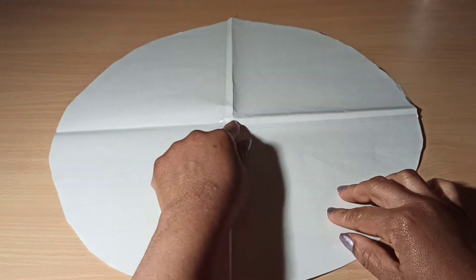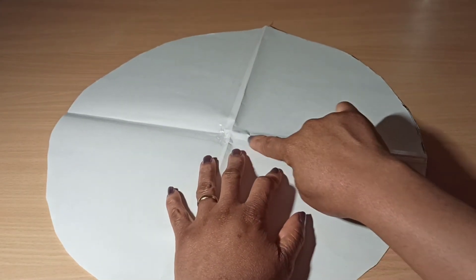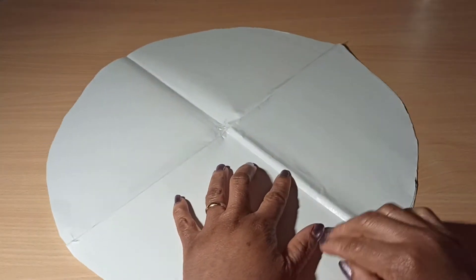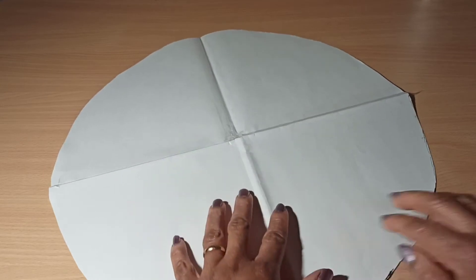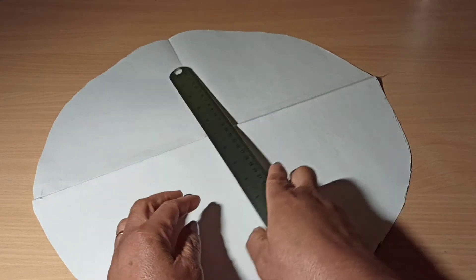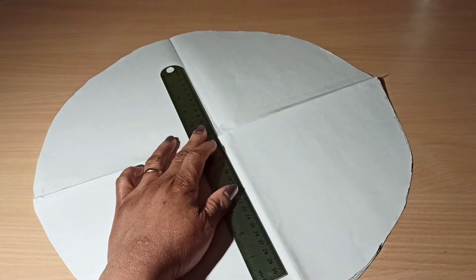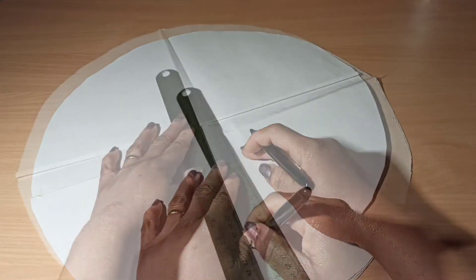You want to go ahead and draw lines across. You want to make two lines, basically like a cross.